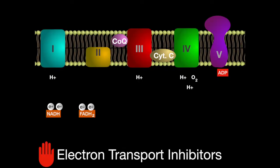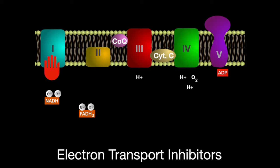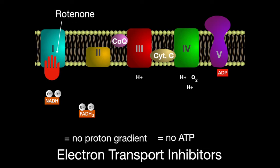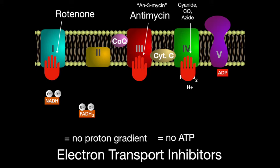Now let's go over oxidative phosphorylation poisons. There are electron transport inhibitors. These stop the flow of electrons through the chain, which disables the creation of a proton gradient and removes the ability for the chain to synthesize ATP. Rotenone inhibits complex I. Antimycin inhibits complex III. And cyanide, carbon monoxide, and azide inhibit complex IV.